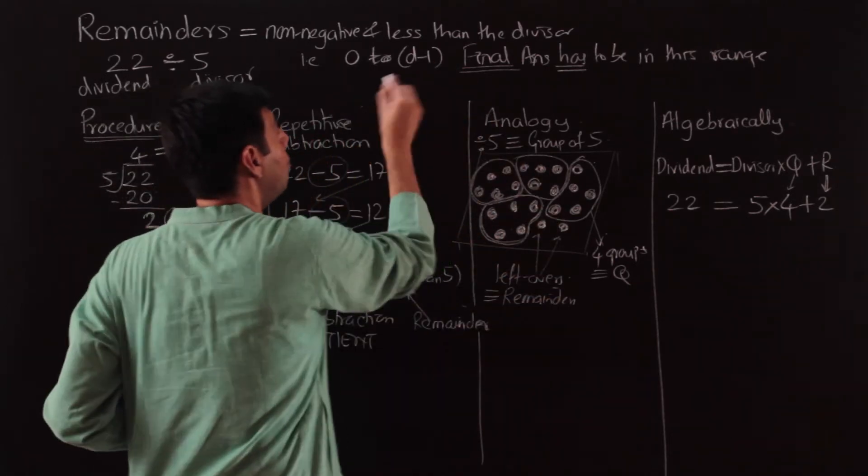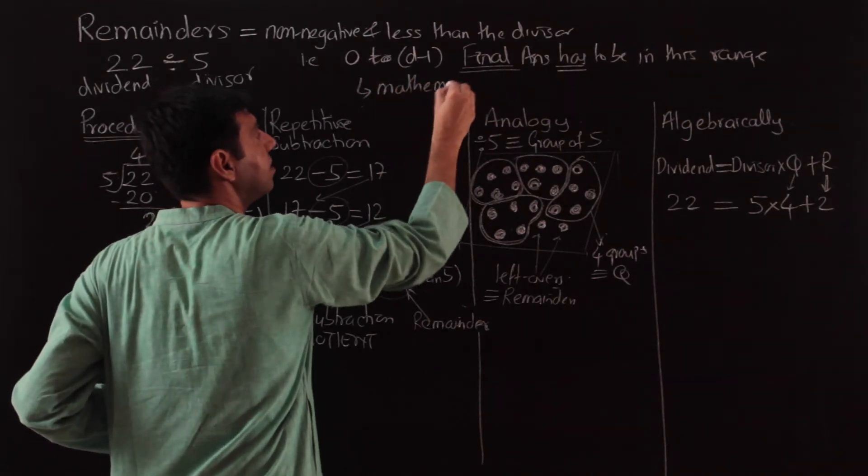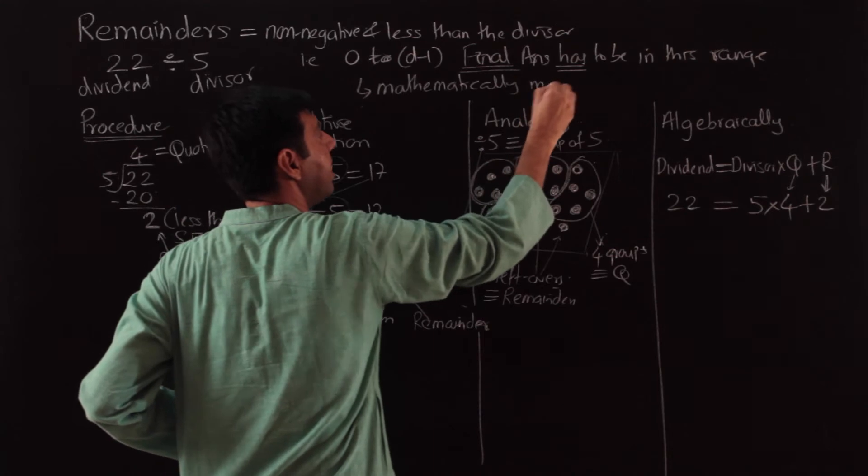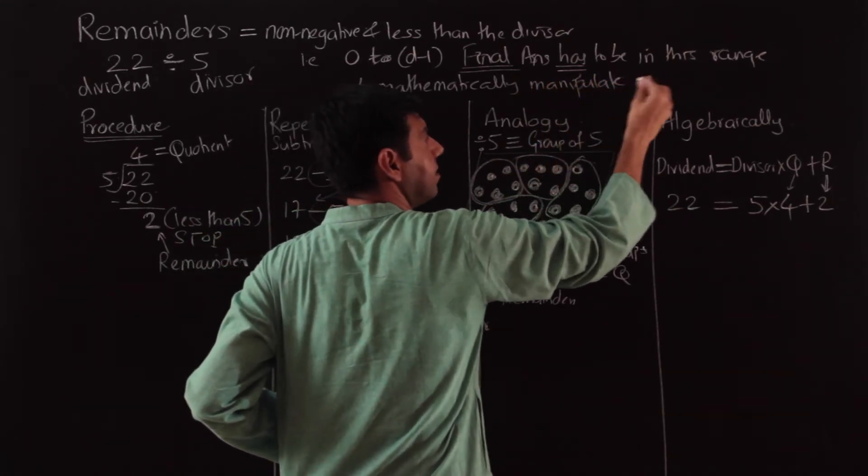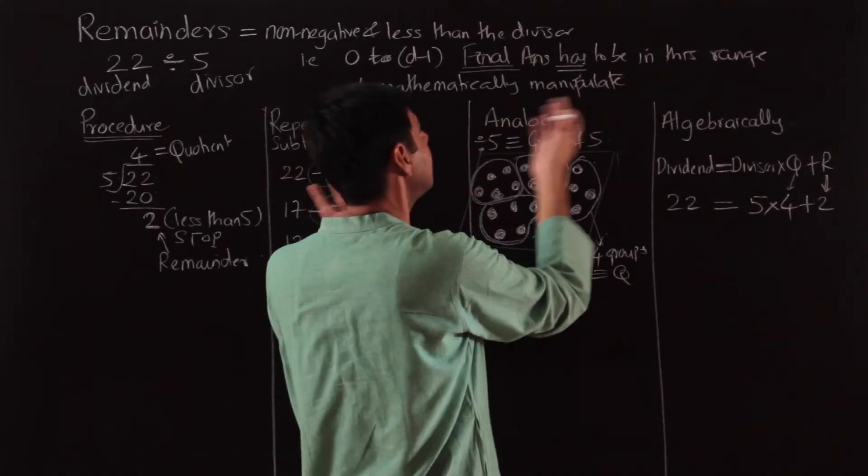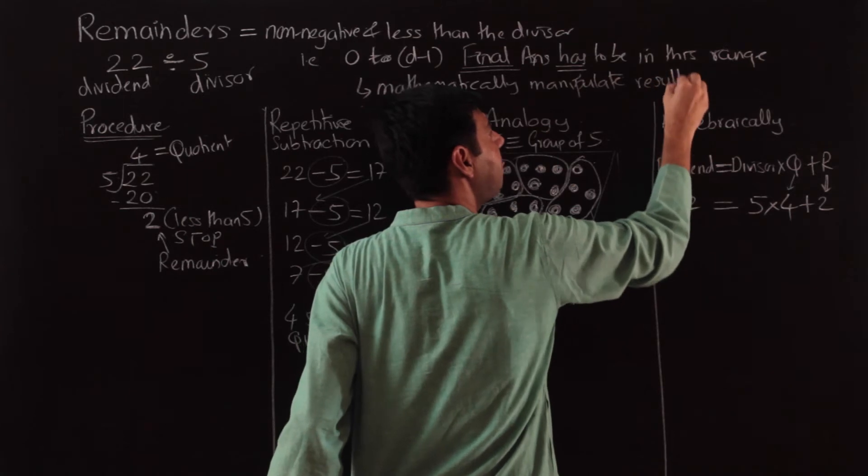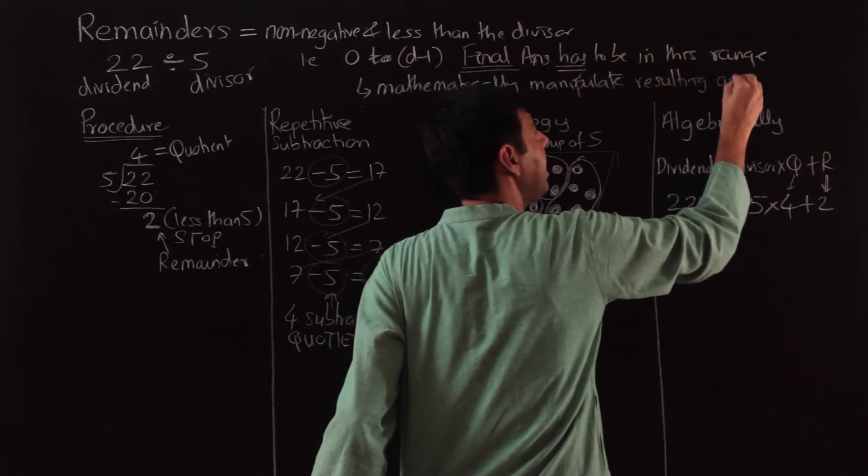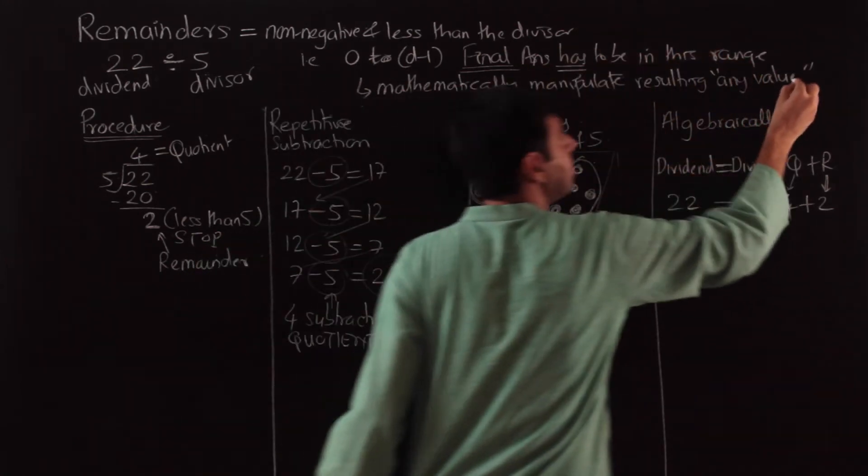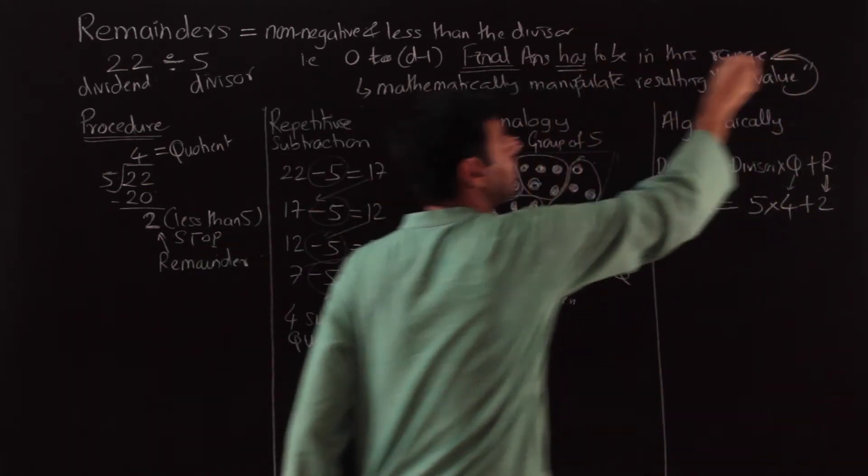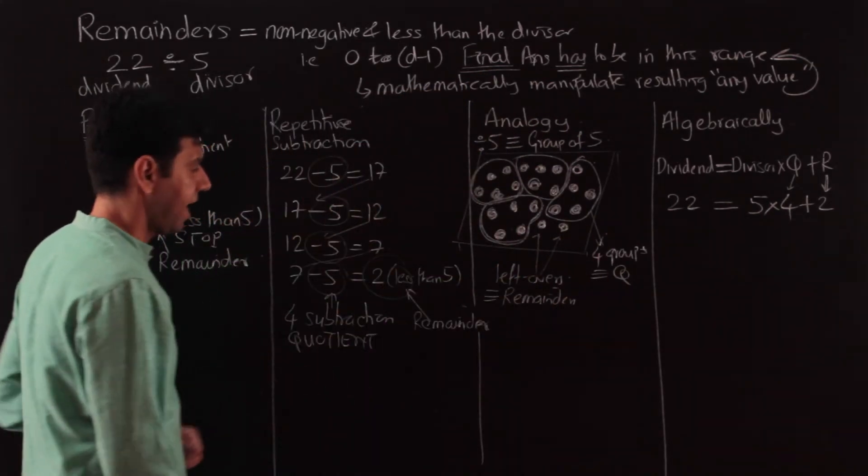In our work, we will mathematically manipulate it a lot. Manipulate means a remainder so as to get any value, resulting in different values. But then that any value you would have to change it to the required range.